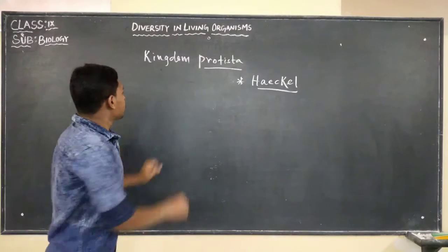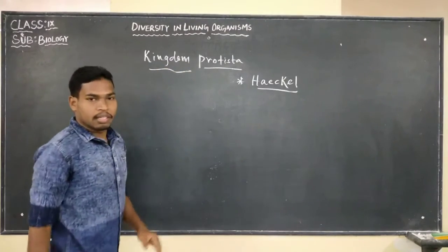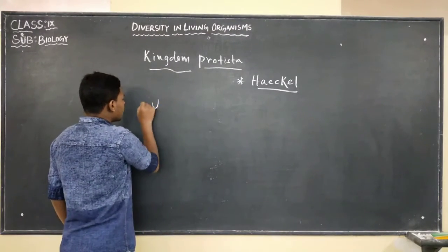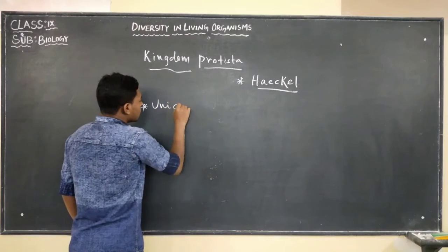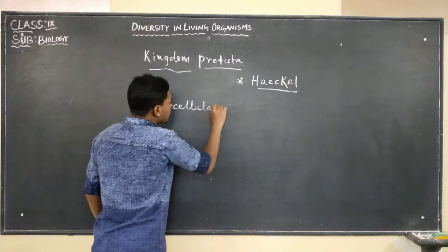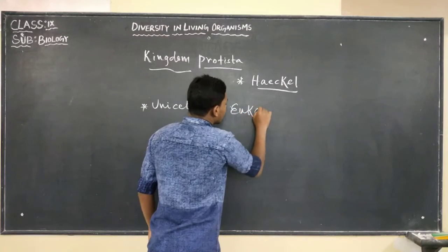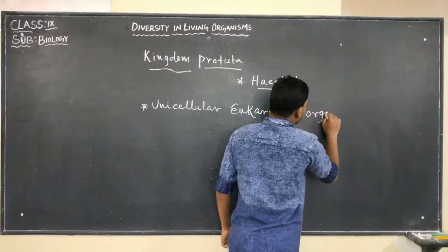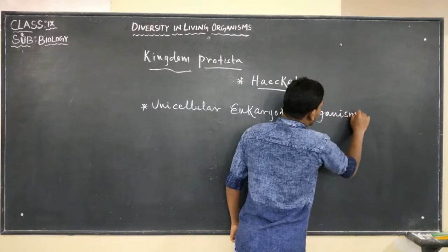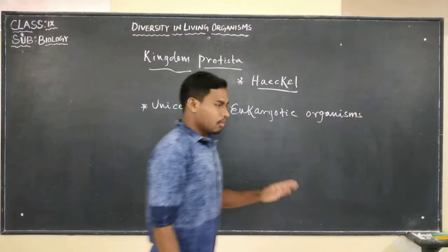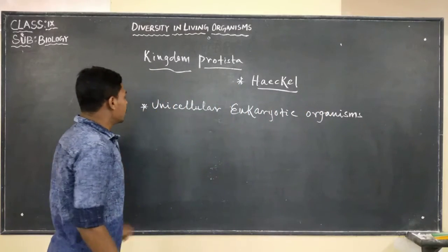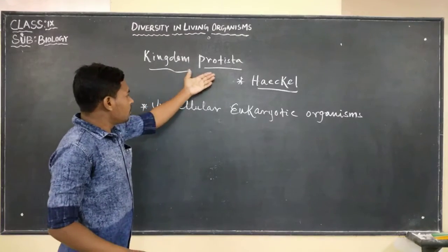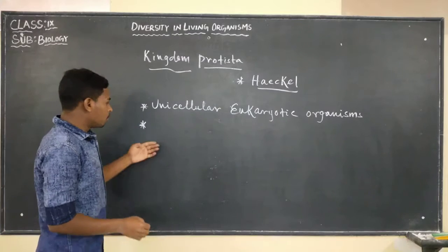In Kingdom Protista, which organisms are grouped under this? They are unicellular and eukaryotic organisms that are grouped under Kingdom Protista. Many organisms of Kingdom Protista use appendages for movement.